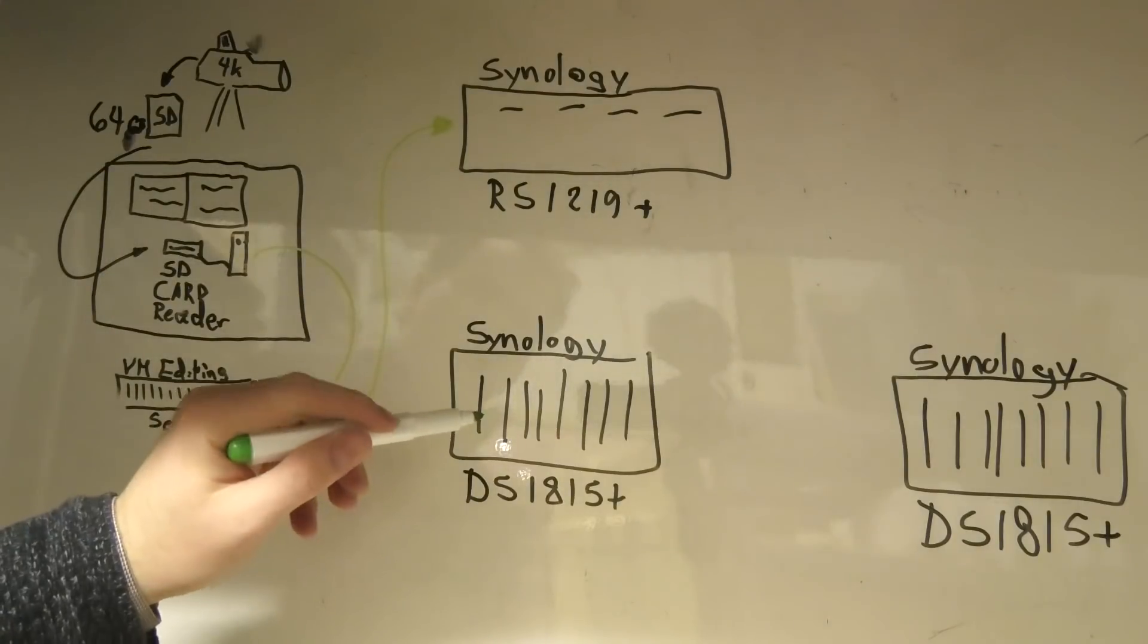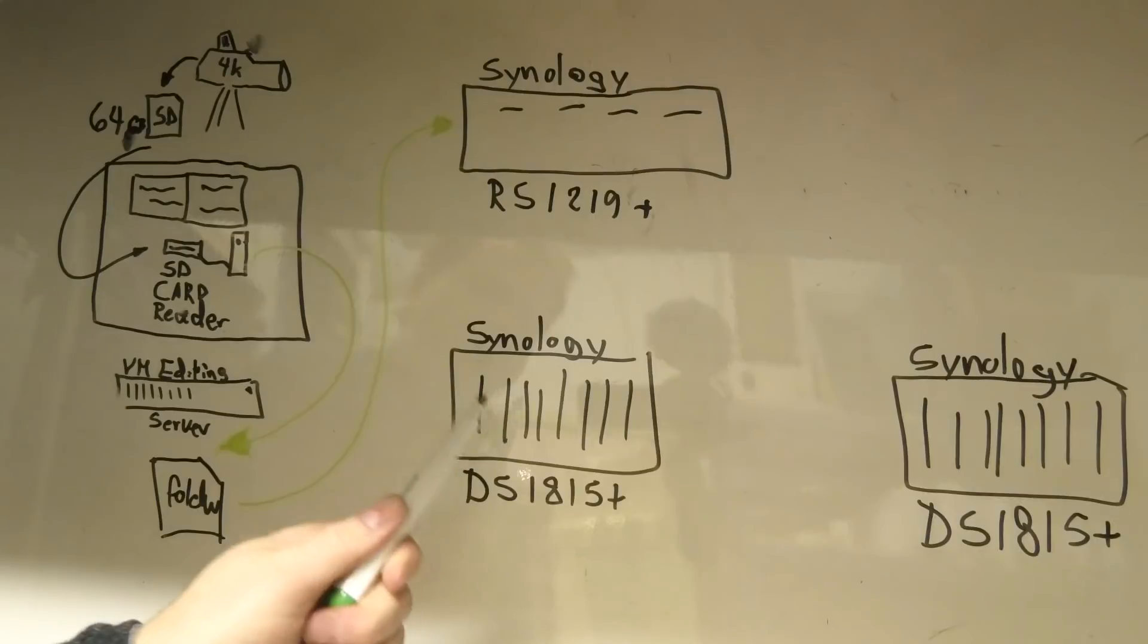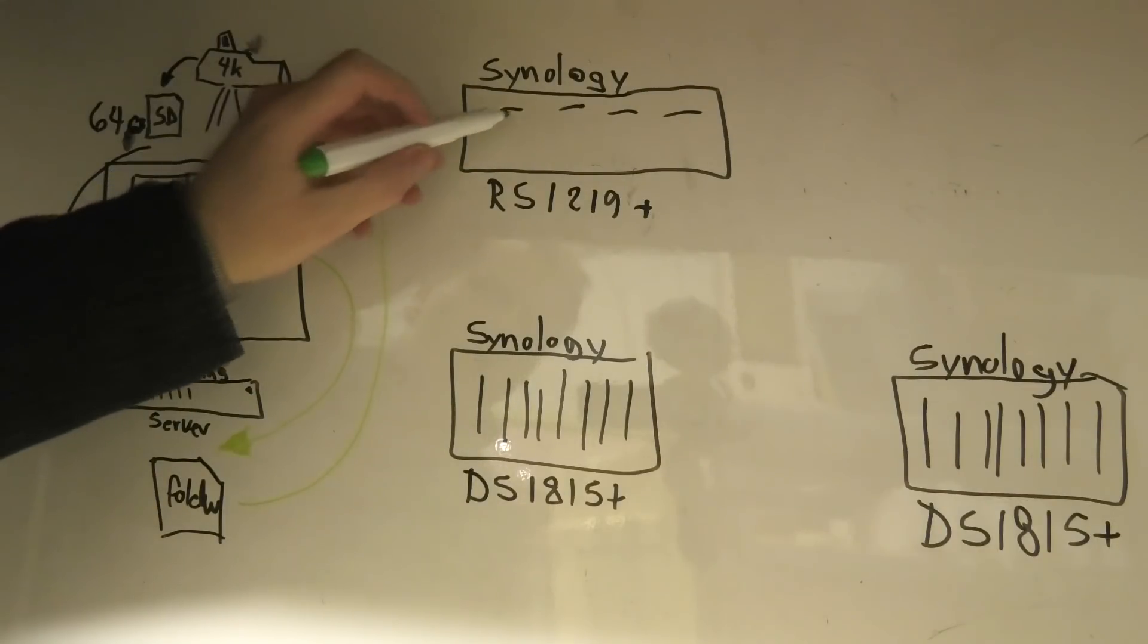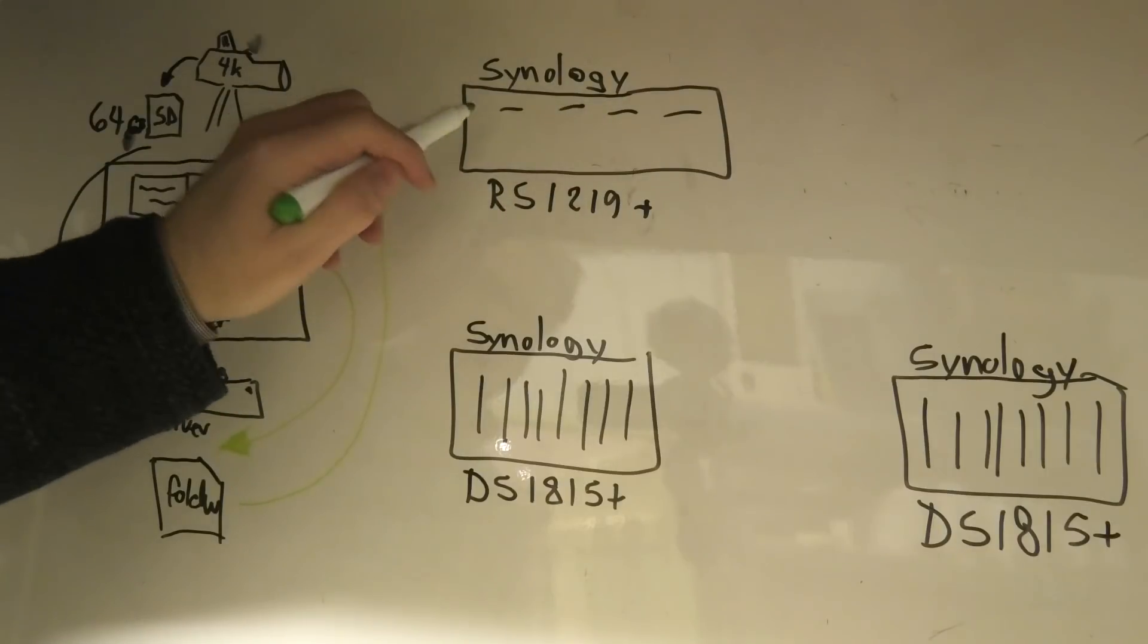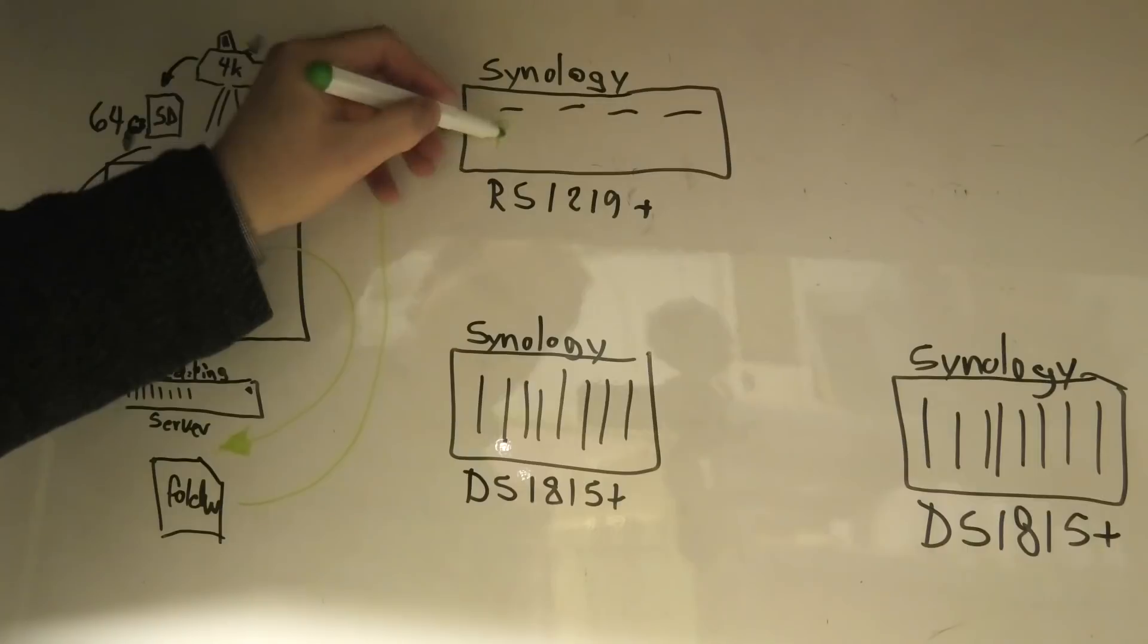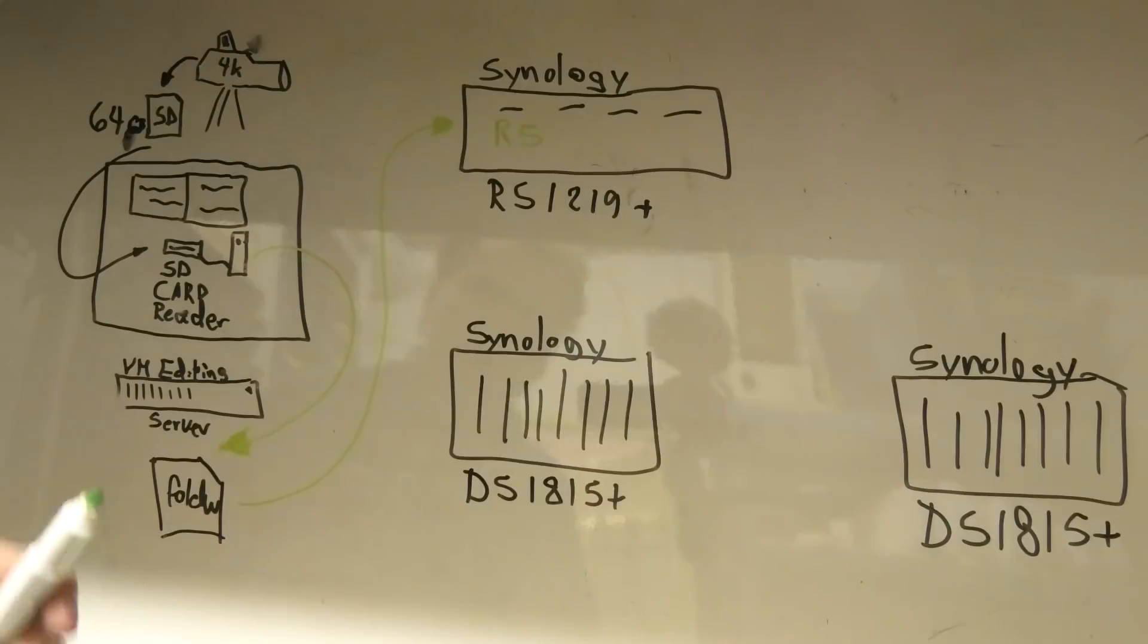And this Synology is in the living room. And it's kind of my offline storage. This one is always on. It has four drives. Each of these are 10 terabytes. And they're in a RAID 5. And yes, you will say that RAID 5 is not secure. And I know, I know, if you don't have a backup, RAID 5 is not enough.